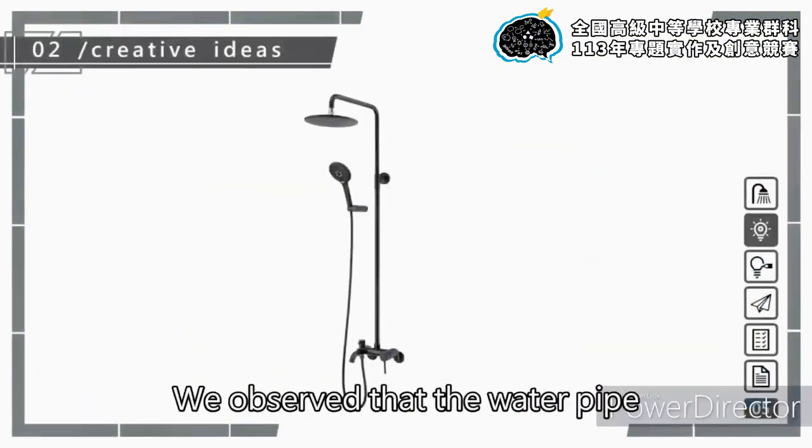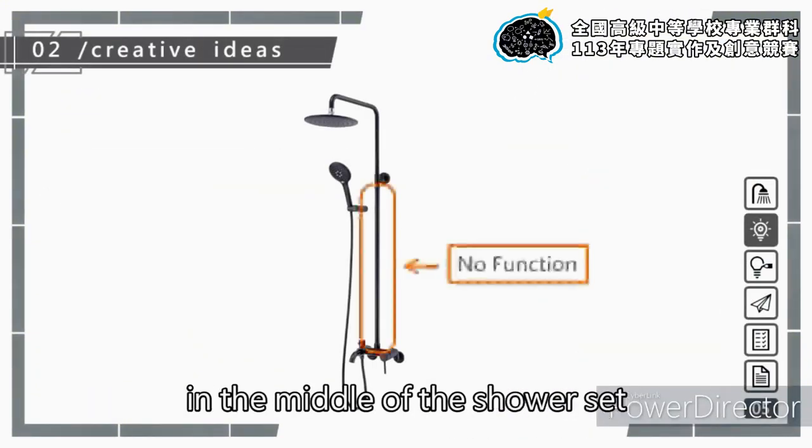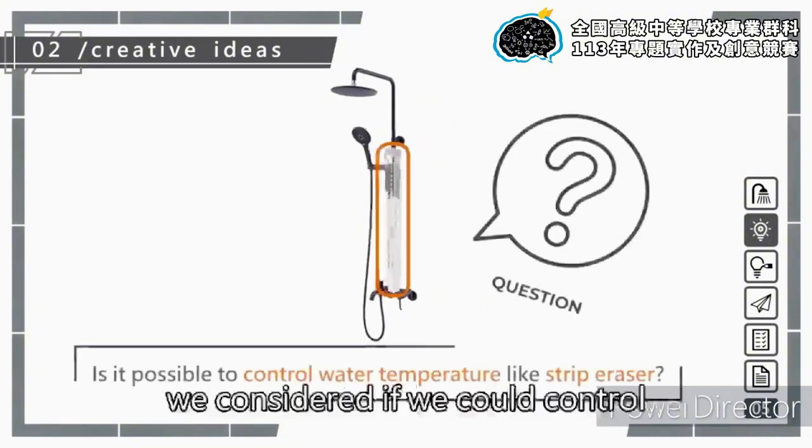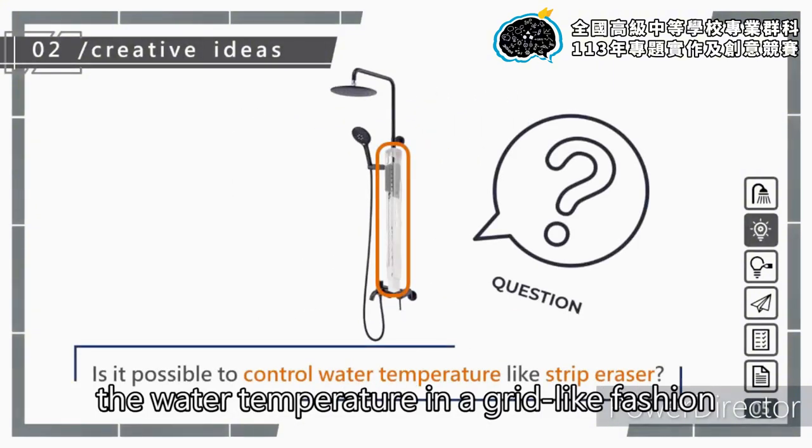Now let me explain further. We observed that the water pipe in the middle of the shower set serves no other purpose. Drawing inspiration from a rubber eraser, we considered if we could control the water temperature in a grid-like fashion, similar to the tenants on a rubber eraser.